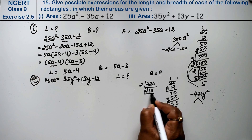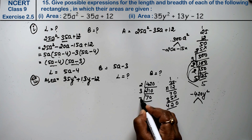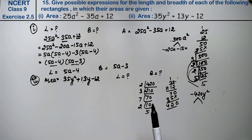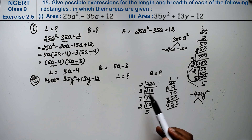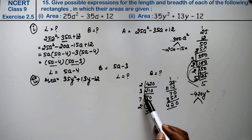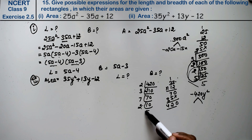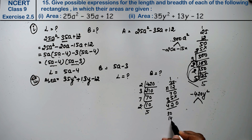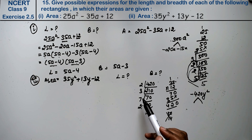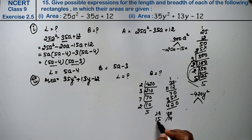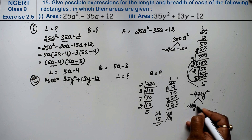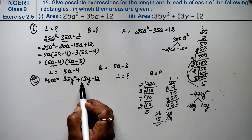We need two factors of 420 that subtract to give 13. Let's try: 7 times 2 are 14 and 5 times 2 are 10, giving 30 and 14 — no. Let's try 7 times 2 are 14, and 14 times 2 are 28, and 15 gives us 28 and 15. We check: 28 minus 15 equals 13. Yes, so the factors are 28 and 15.